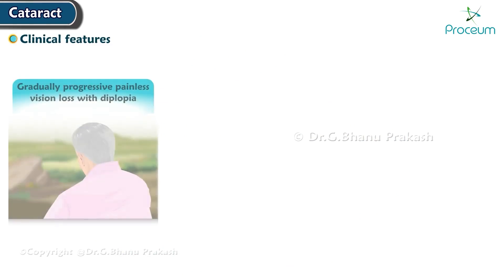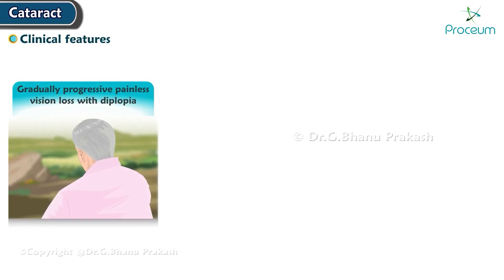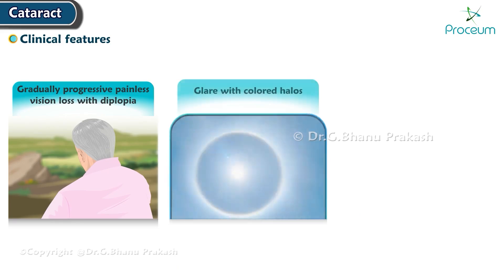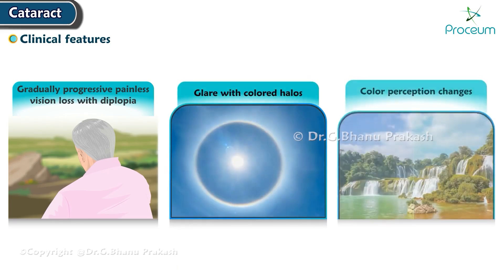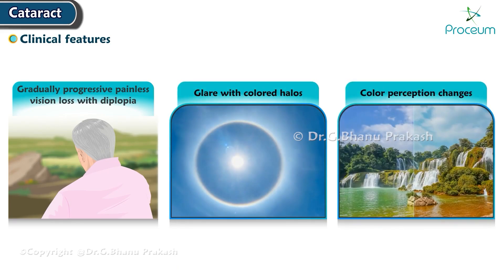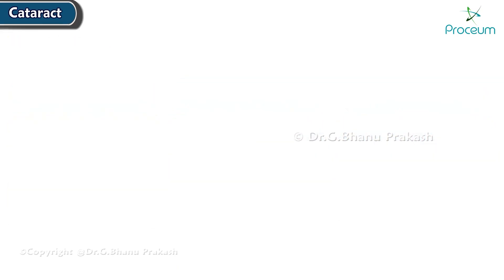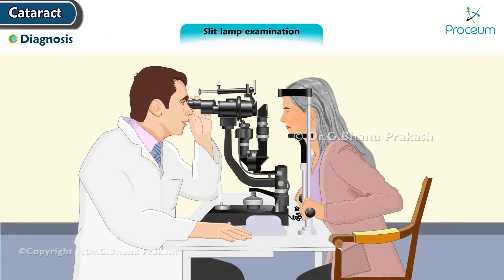Clinical features of cataract include gradually progressive painless vision loss, diplopia, glare with colored halos, and color perception changes. Diagnosis is done by slit lamp examination.